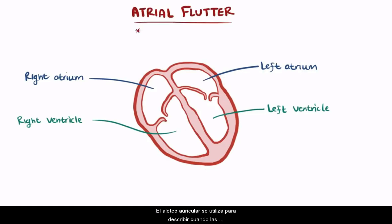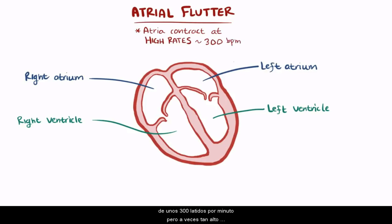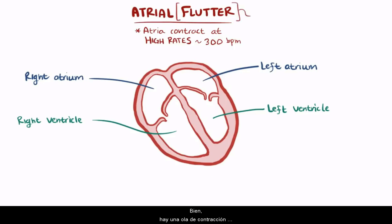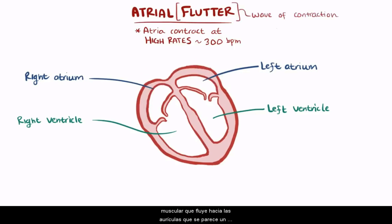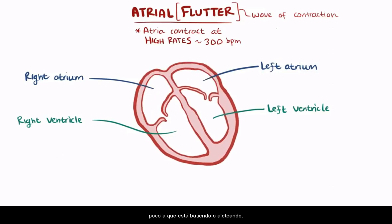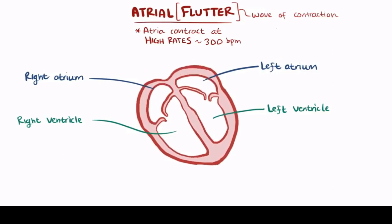Atrial flutter describes when the atria contract at really high rates, about 300 beats per minute, but sometimes as high as 400 beats per minute. Why flutter? There's a wave of muscle contraction that flows through the atria that looks a little like it's flapping or fluttering — hence the name.